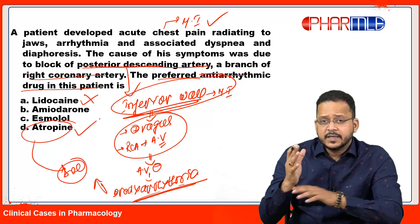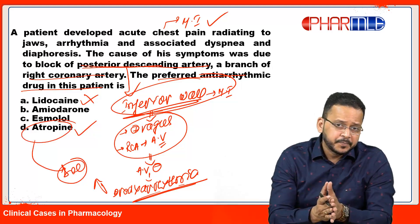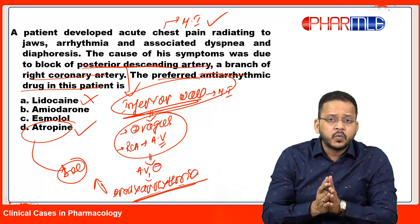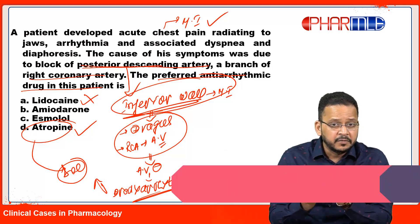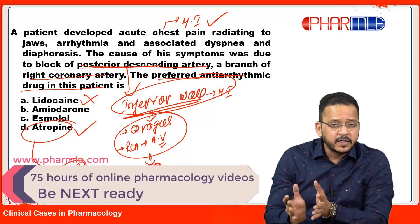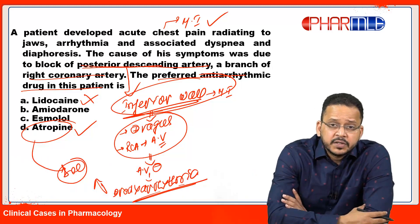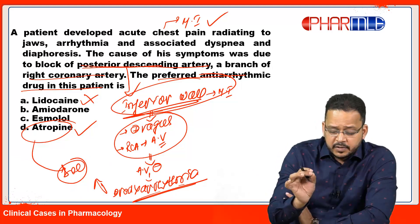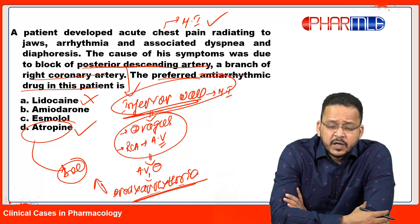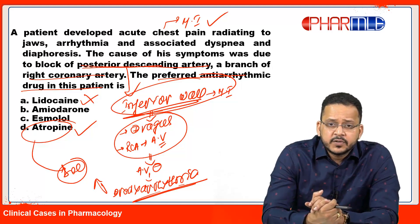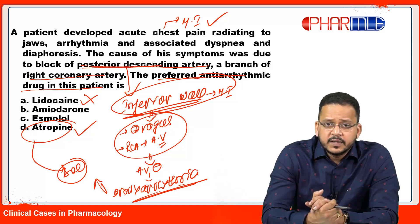The drug of choice for bradyarrhythmia is atropine, so the right answer here is atropine. In this clinical case, you made a diagnosis, used knowledge of anatomy to identify inferior wall MI, and used pharmacology to determine that atropine is the drug of choice. For any other type of MI causing arrhythmia, the answer is lidocaine, because other MI locations cause tachyarrhythmia. I'll keep posting these integrated questions so you're ready for your exams. All the best, see you next week with another question — bye bye.